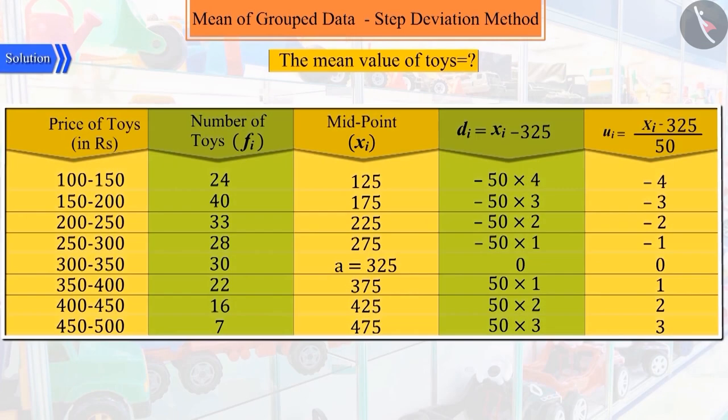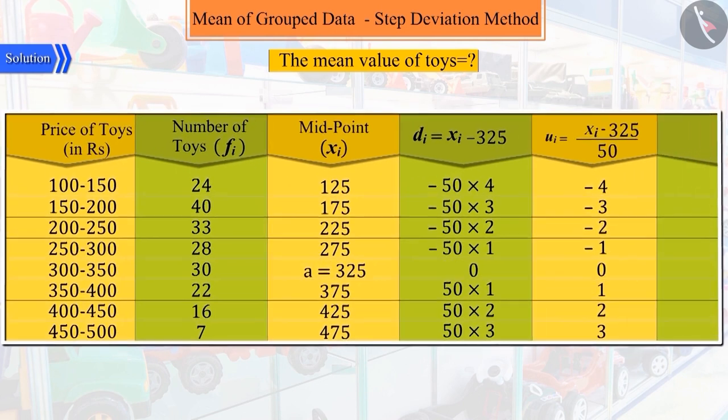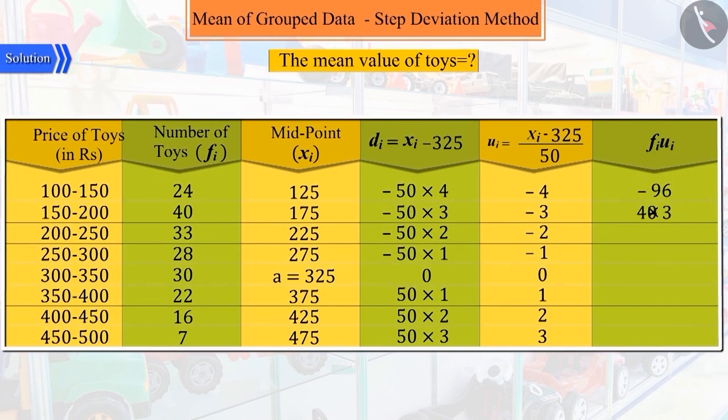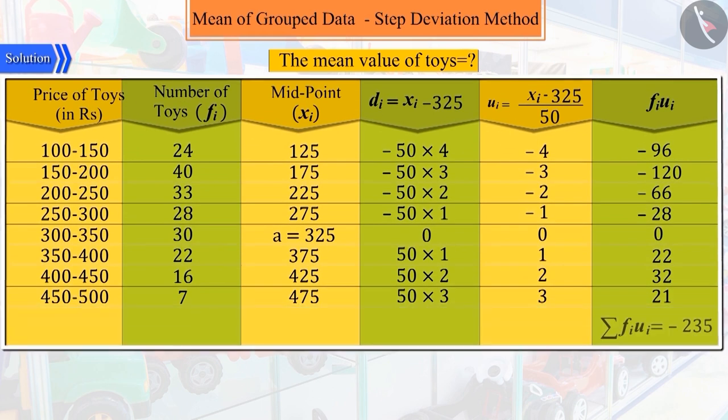Very good. Now we multiply each UI by FI and get the sum of their products, and divide them by the sum of their corresponding frequencies.